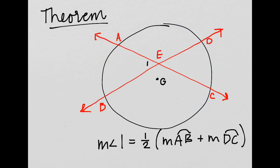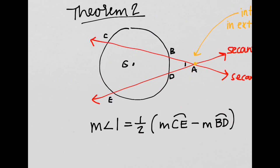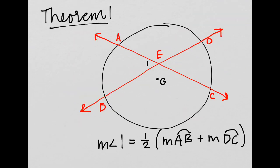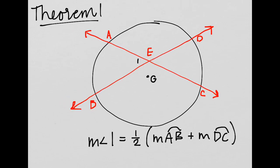Let's try a couple more. Here's one of the theorems we're going to use. We have a circle and two lines that go through it — do you remember what those are called? A line that goes through and intersects at two points in a circle is called a secant. So this is an angle formed by two secants that intersect in the interior. The theorem we're talking about is: if these two secants intersect and the intersection is inside the circle — we'll look at outside the circle later — it creates an angle, and since these are two lines, they also create vertical angles.